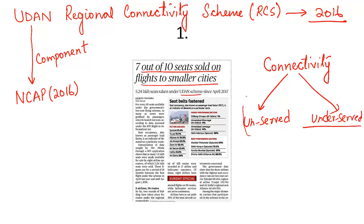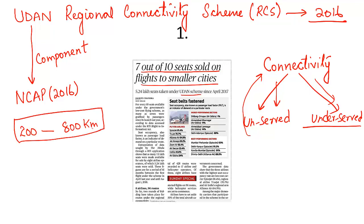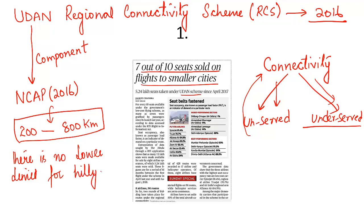We can improve connectivity to these unserved airports by reviving existing airstrips and existing airports, so that persons in these regional towns are able to make affordable flights. This scheme is applicable on flights covering a distance between 200 to 800 kilometers. However, one important fact for your prelims: there is no lower limit for hilly areas, island areas, remote areas, or security-sensitive regions.